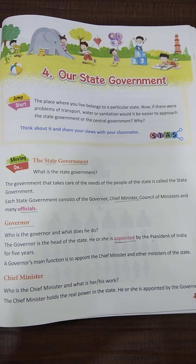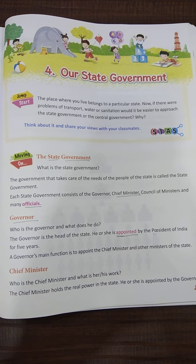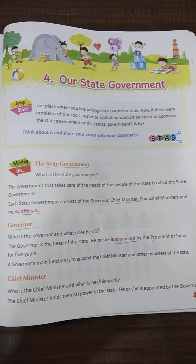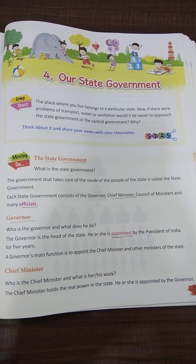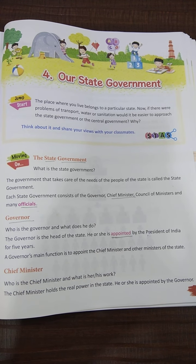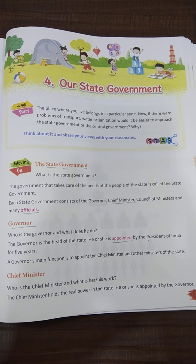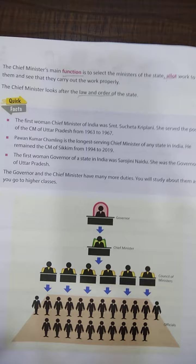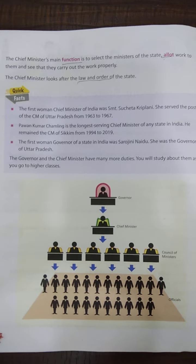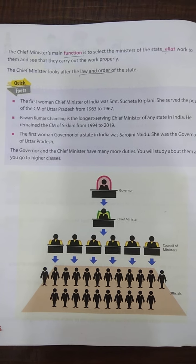Let's move to the next, that is chief minister. Who is chief minister and what is the chief minister's work? The chief minister holds the real power in the state. He or she is appointed by the governor. The main function of chief minister is to select the ministers of the state.